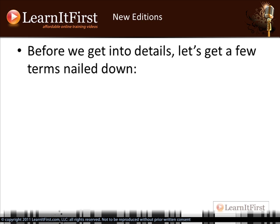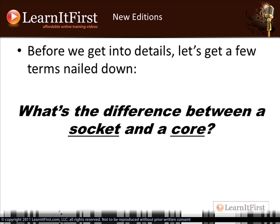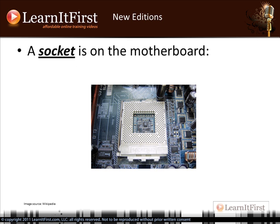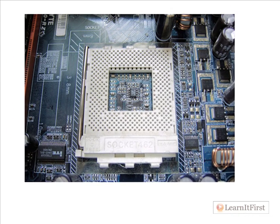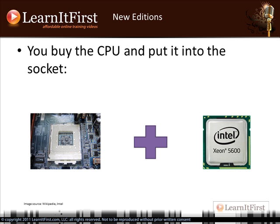Before we get into the details, let's cover a few things. What's the difference between a socket and a core at the CPU level? This is super important when it comes to understanding editions and licensing, and it's going to become even more important in SQL Server 2012. A socket is on your motherboard — you can actually see it says 'socket' right there. That's what you put your CPU into. So you buy a CPU and put it into the socket. On the left is a socket; on the right is an example Xeon 5600 series CPU.